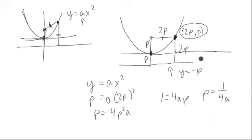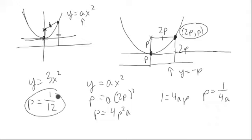This means in particular that if I give you something like y = 3x squared, then the P value of where the focus is located is simply 1 over 4 times that leading coefficient, which is 1 over 12. So I would know that I would go up 1 over 12 to the focus and down 1 over 12 to the directrix.